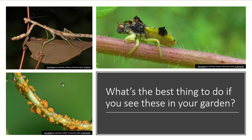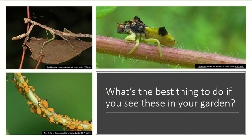Being able to correctly identify an organism can help you determine what to do in certain situations. If you see bugs in your garden, you might not know whether they're a problem or not. For example, the aphids shown down here are insects that get into plants and suck out the juices, which is harmful. If you see a lot of them on a garden plant, that's cause for concern.